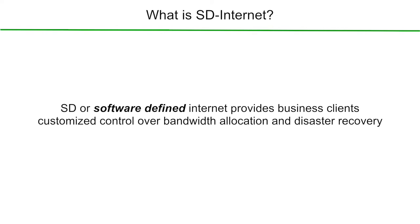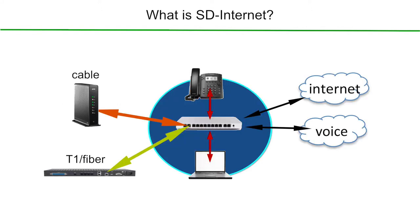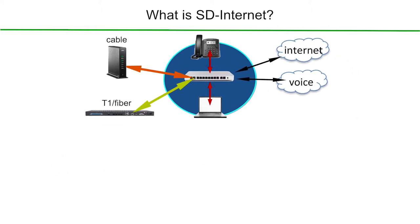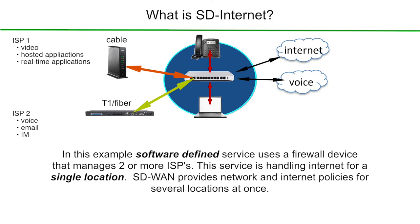SD, or software-defined internet, provides your business customized control over the bandwidth, so you can allocate it for different functions and for disaster recovery. You'll notice in the illustration we have two internet providers — a cable provider and a T1 provider. It's also important to note that in this example the service is handling internet for a single physical location, whereas with SD-WAN we're providing network and internet policies for several locations at one time.